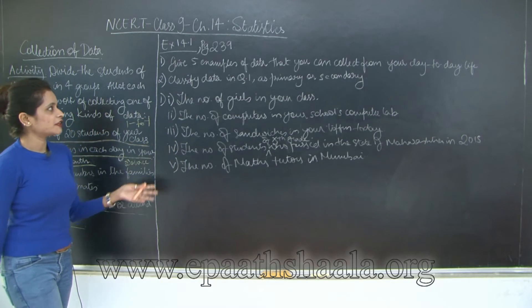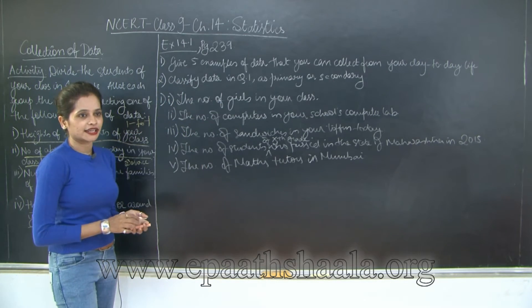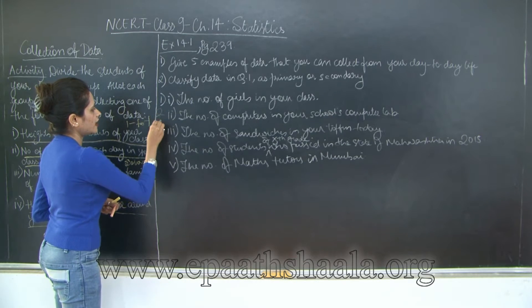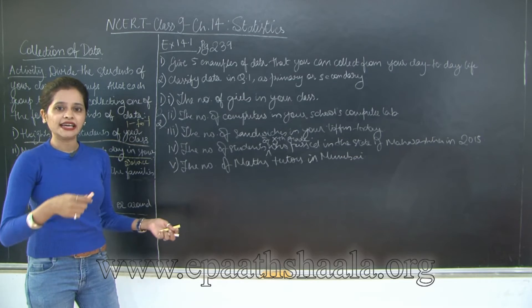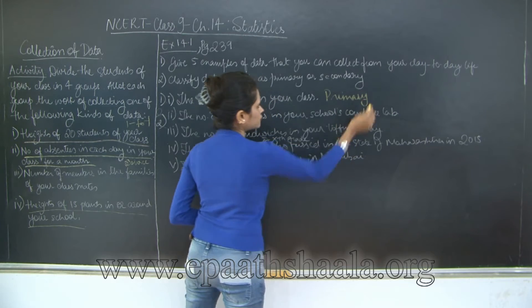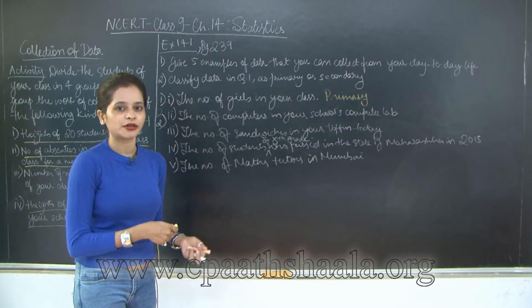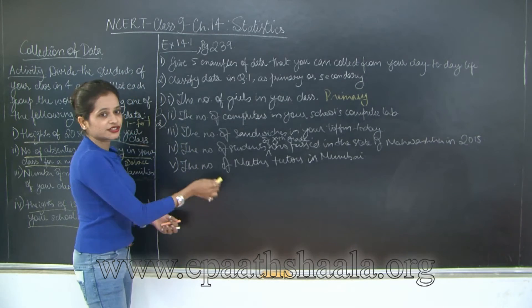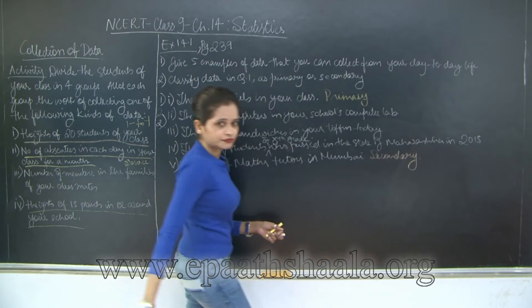So these are five examples of data that you can collect in your day-to-day life. Now we need to classify the data in question 1 as primary or secondary data. I am going to mark these here itself, combining question 1 and 2. Let's see the first one: the number of girls in your class. Simple to count, you can just do it personally directly, so this is going to be primary data. Now let's do this exercise randomly. The number of maths tutors in Mumbai - is it possible for anyone to go directly and find this information? No. It is going to be available either on the internet or newspaper or in the telephone directory. You can call Just Dial and they can give you this information. So this is through a source, so this data is going to be secondary.